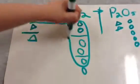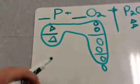So this right here creates an atom of P2O5.